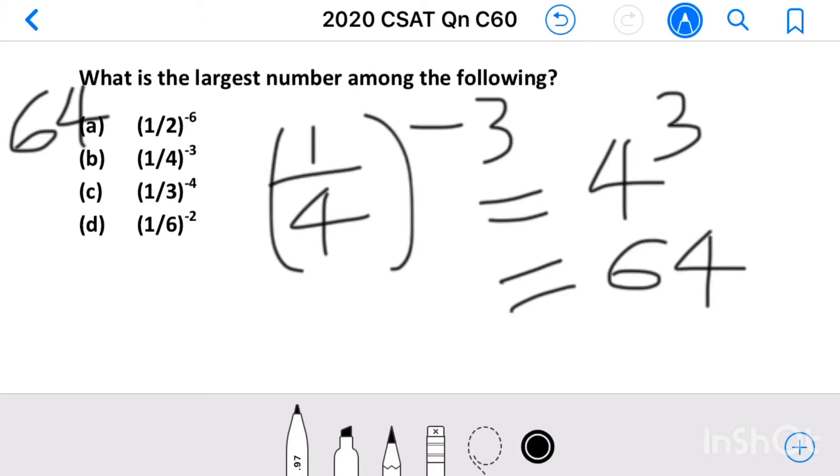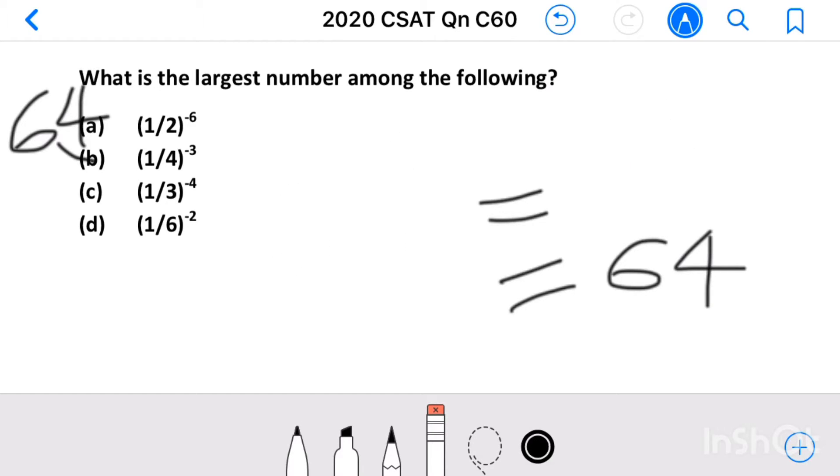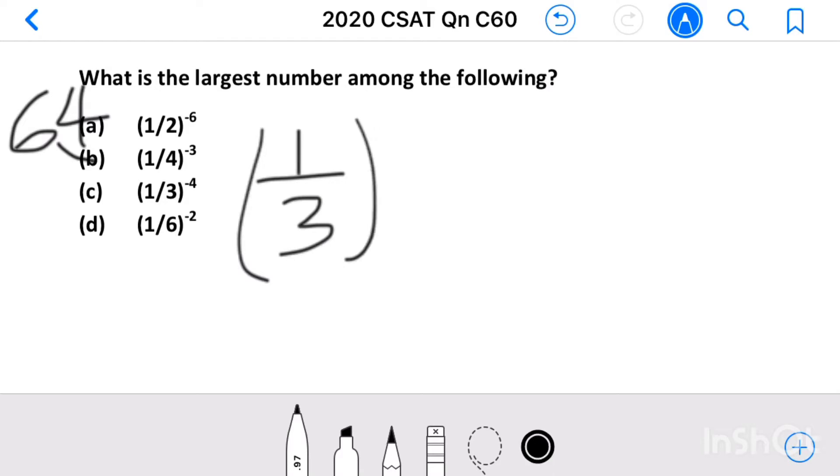Then third term: 1 by 3 raised to minus 4. This we can write as 3 raised to 4. 3 raised to 4 means 3 into 3 into 3 into 3.